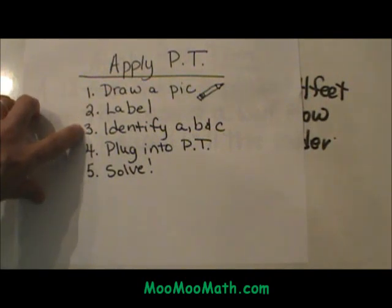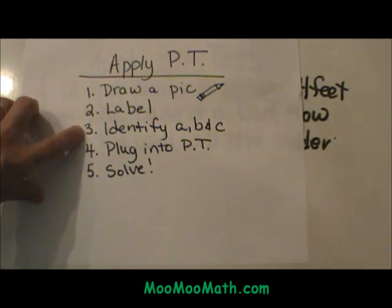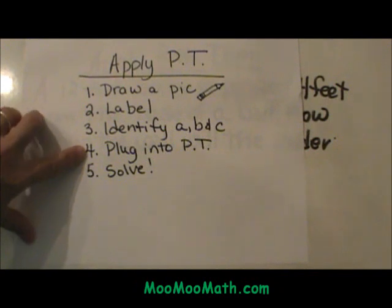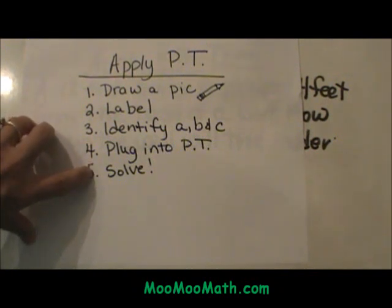Since this is the Pythagorean Theorem, we are going to identify where is A, where is B, and where is C. Then we are going to plug everything that we do know into the Pythagorean Theorem and solve for the unknown.